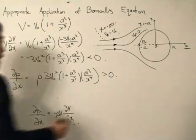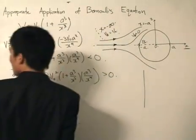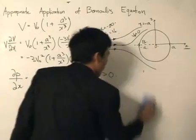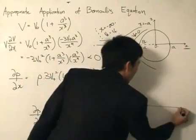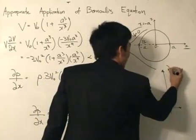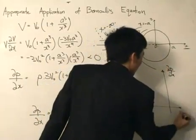So 3 rho v0 squared, 1 plus a to the 3 x to the 3, a to the 3 x to the 4. And close bracket. Now what can we tell about this thing over here? Well, it turns out that this thing over here is more than 0. If this is less than 0, we multiply that by a negative sign, we get more than 0. So now I've also sketched out the velocity, the pressure gradient in terms of x over here. Or I've sketched it out before, so I'm going to write it. So write it here. Partial p partial x and x over here.